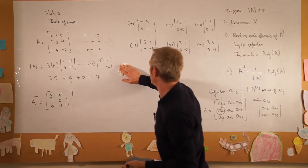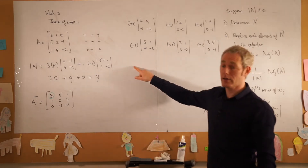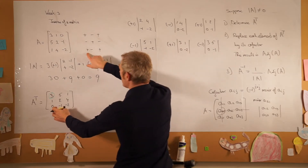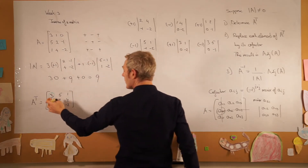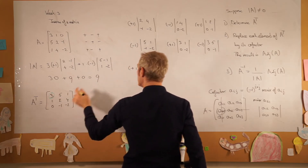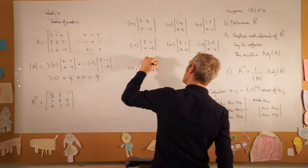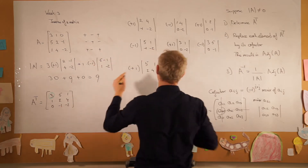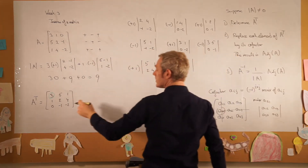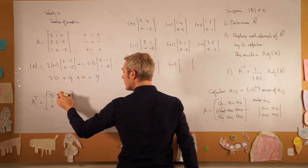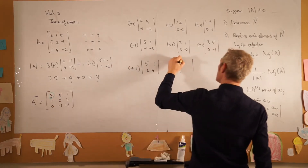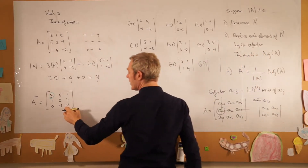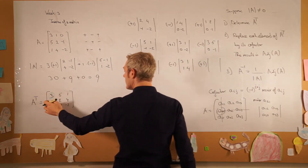For the third row: the cofactor of 0 has a plus sign, plus 1 times the minor — removing that column and row leaves 5, 1, 2, 4. The second element of the third row has a minus sign: minus 1 times the minor from removing that column, giving 3, 1, 1, 4. The final element has a plus sign and we are left with 3, 5, 1, 2.